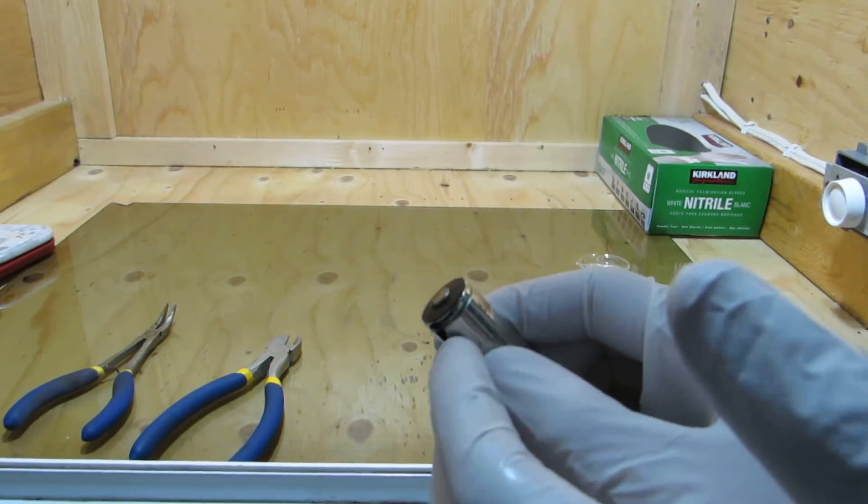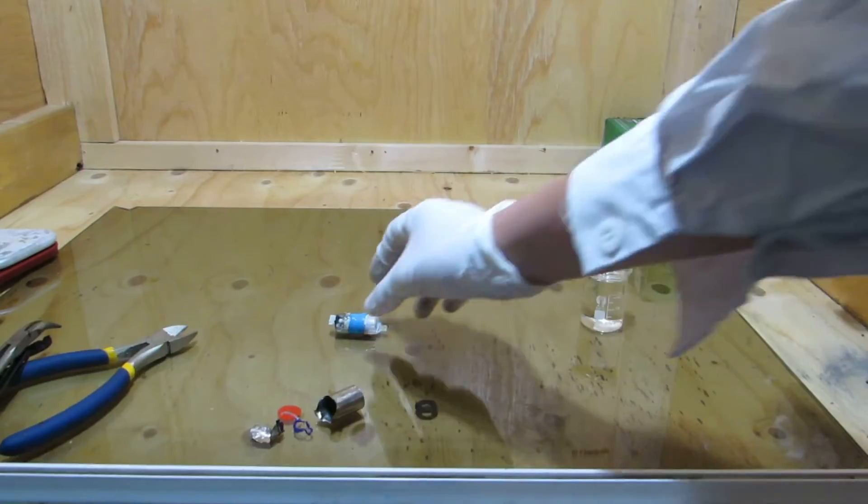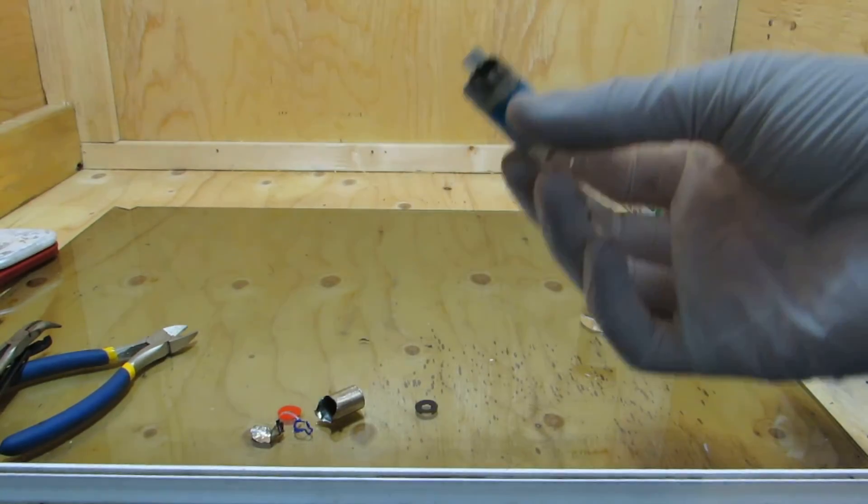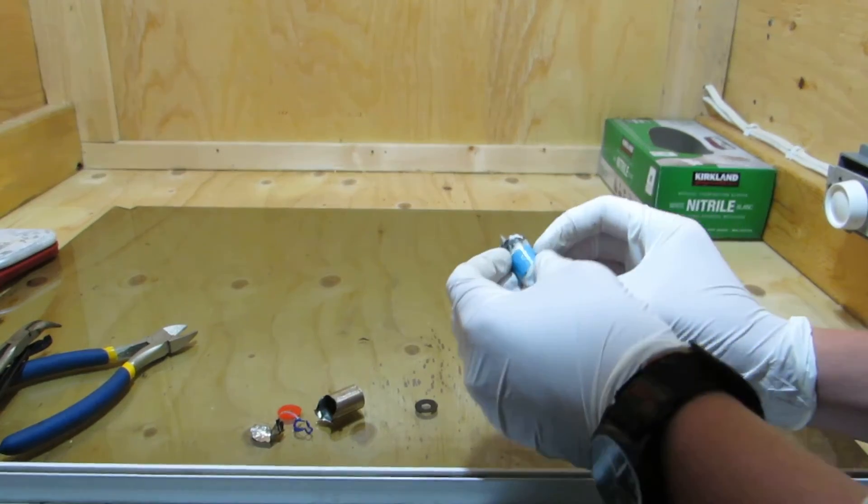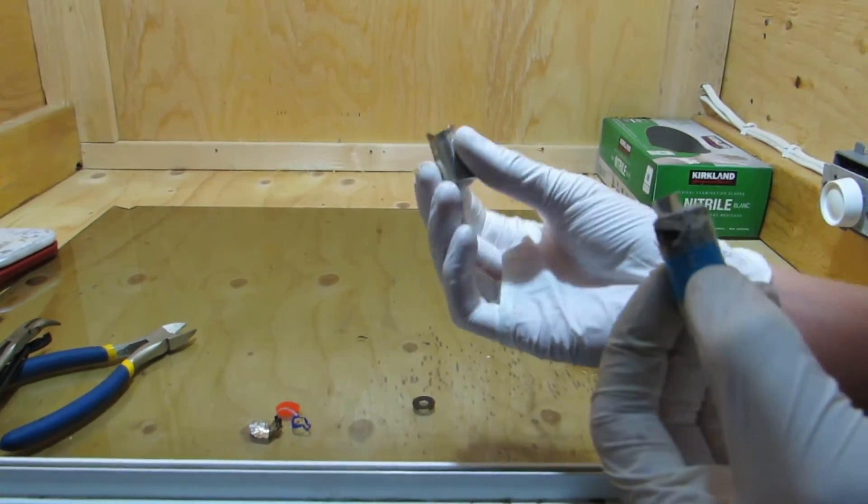Some wire cutters or a pipe cutter can be used to remove the top of the battery, and then the battery contents can be removed from the steel casing. It is important to do this either outside or in a fume hood, as the battery can short out and burst into flame.